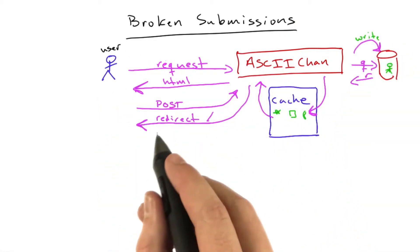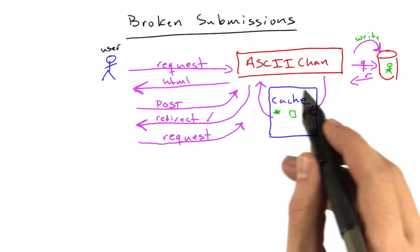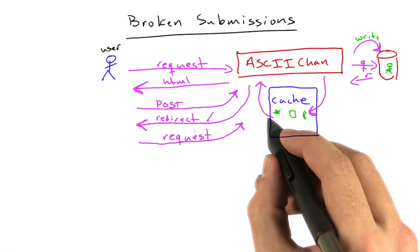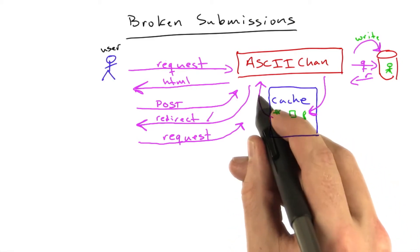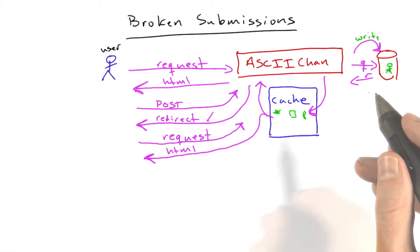The user then requested the front page again, at which point ASCII Chan said, well, the data's already in the cache. I don't need to check the database, and return the value from the cache again straight to the user without the new value. This is a problem.